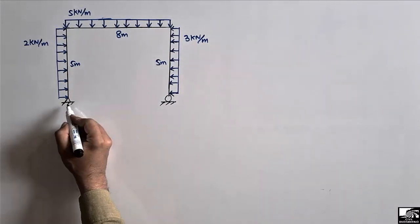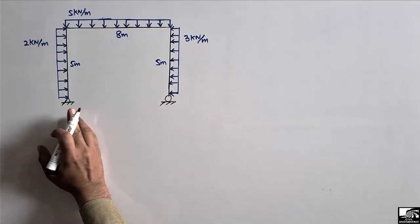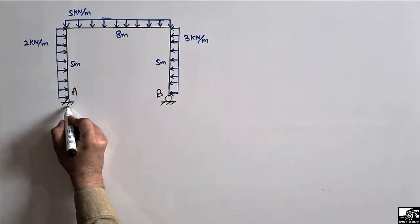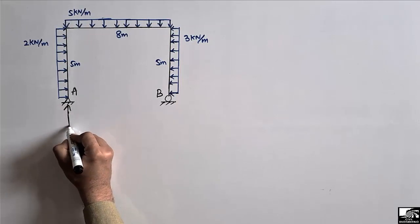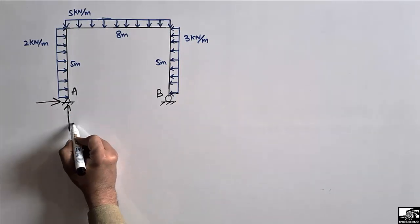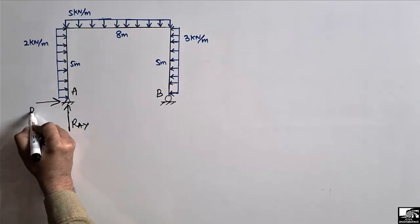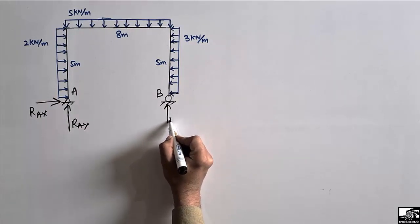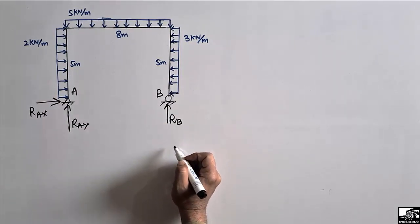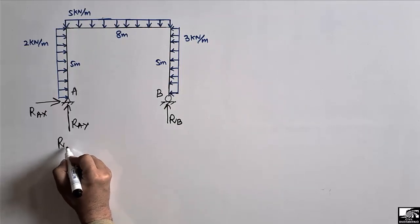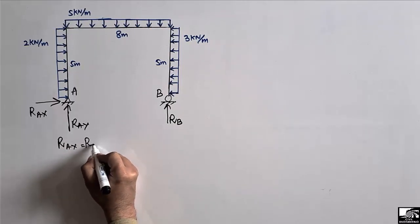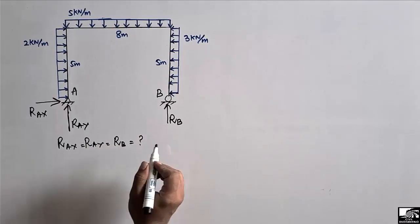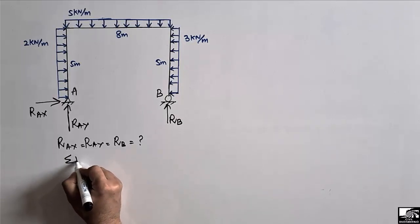We are interested to find out the support reactions. Let's call this support A and this support B. Support A is a hinge support, so it can resist both vertical and horizontal loads — giving reactions RAY and RAX. Support B is a roller support, so it can only take a vertical reaction RB. We want to find RAX, RAY, and RB.